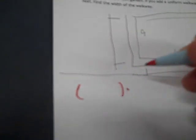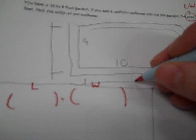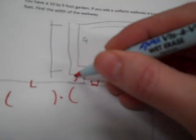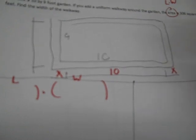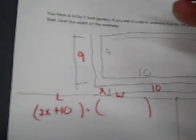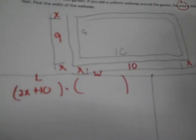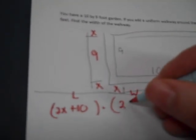I set up two parentheses for length times width. For length: from here to here we have 10 units, and the unknown walkway on each side is x, giving us 2x plus 10. For width: we have 9, and both sides are also x, giving 2x plus 9.